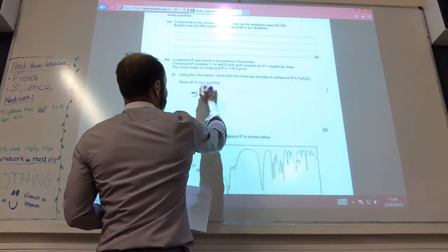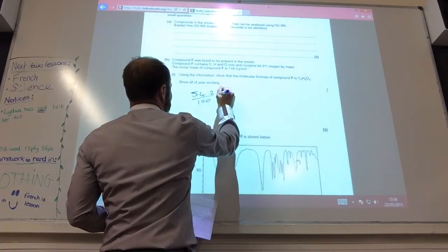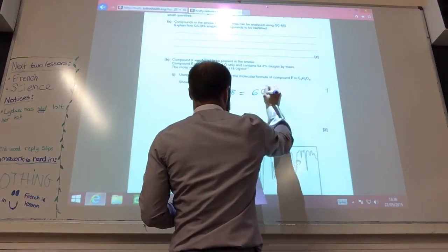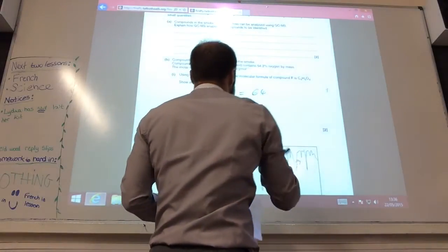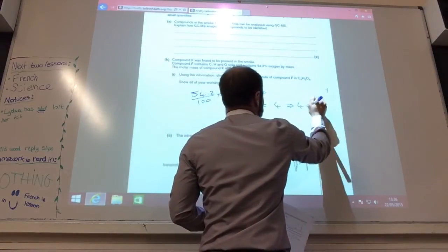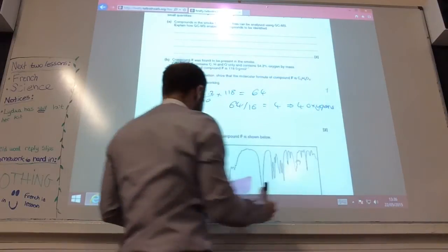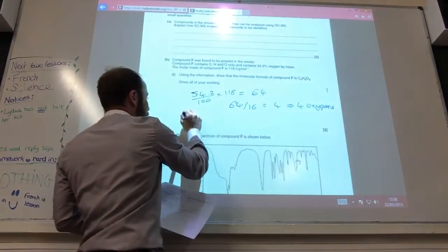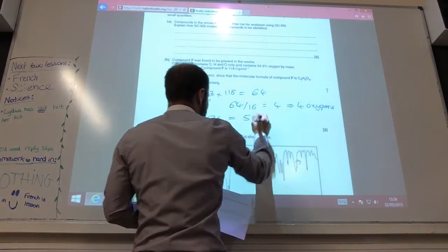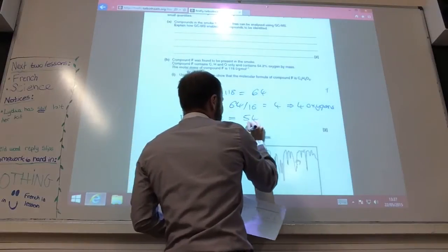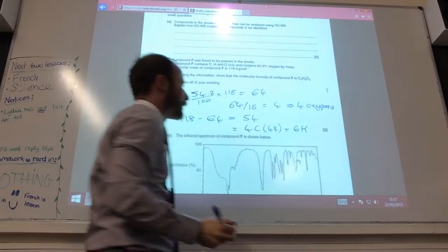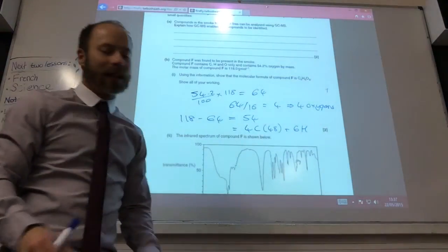Usually the information of the molecular formula. So if I take 54.2% of 100 and 18, I get that to be 64. 64 divided by 16 equals 4, therefore 4 oxygens. If I then take 118 minus 64 for my 4 oxygens, I make that to be 54. And 54 relates to 4 carbons which is 48 plus 6 hydrogens which is 6. 48 plus 6 equals 54.